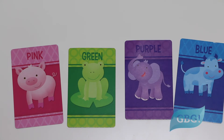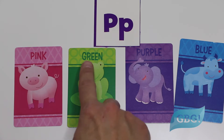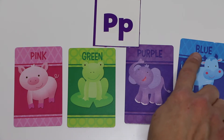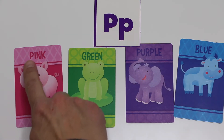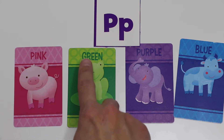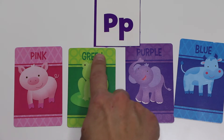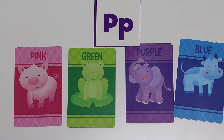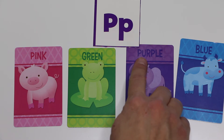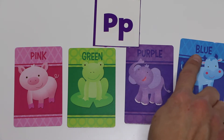Which colors begin with the letter P? Pink. Pink begins with letter P. Green. Green does not begin with letter P. Purple. Purple begins with letter P. Blue. Blue does not begin with letter P.